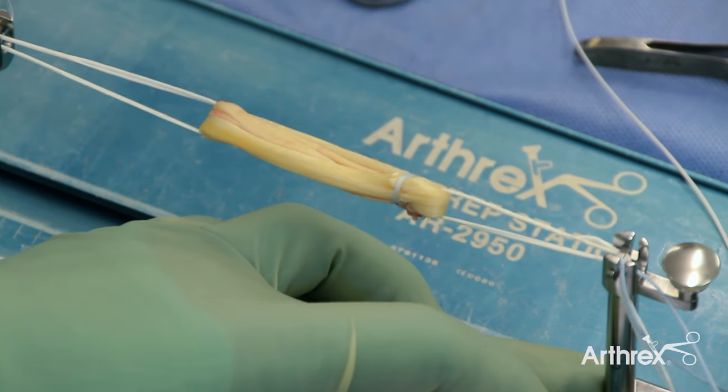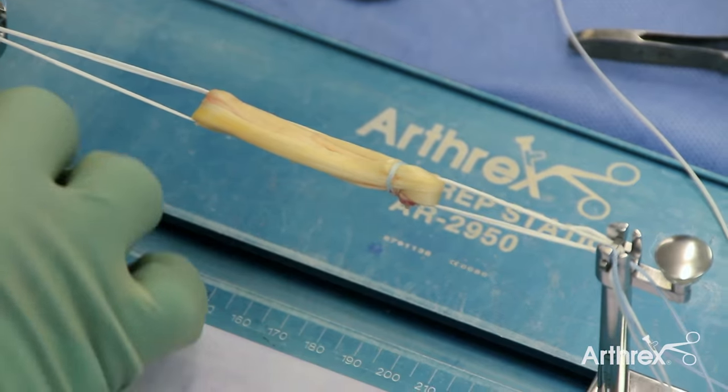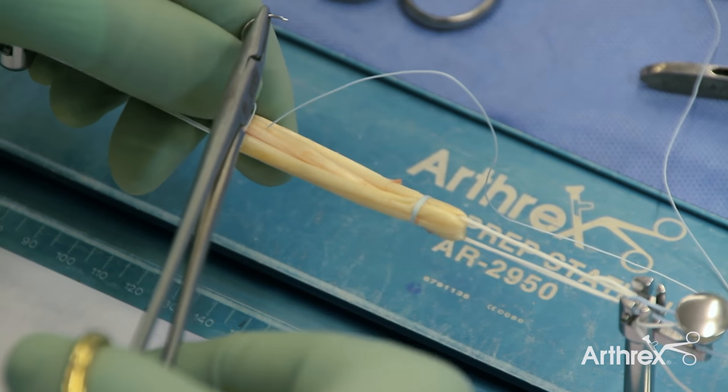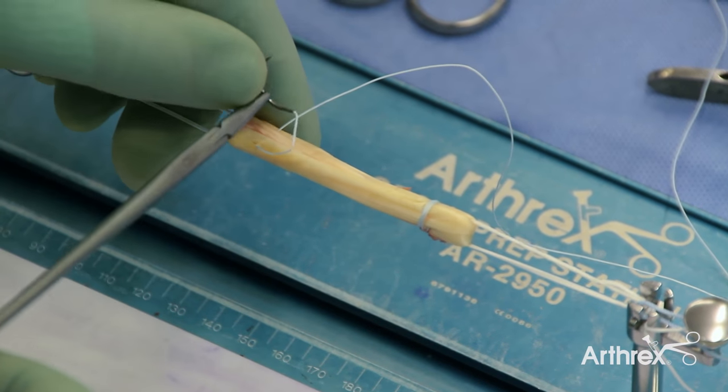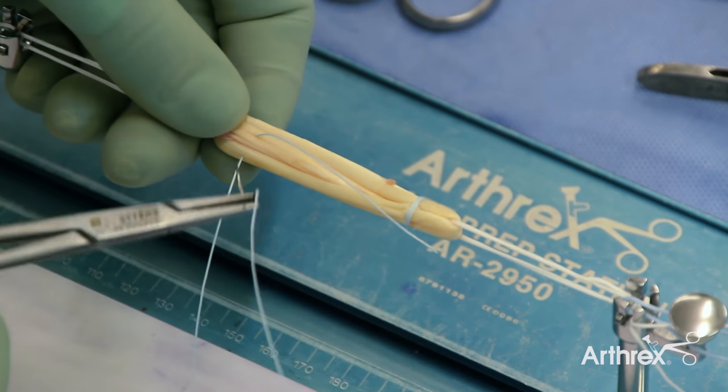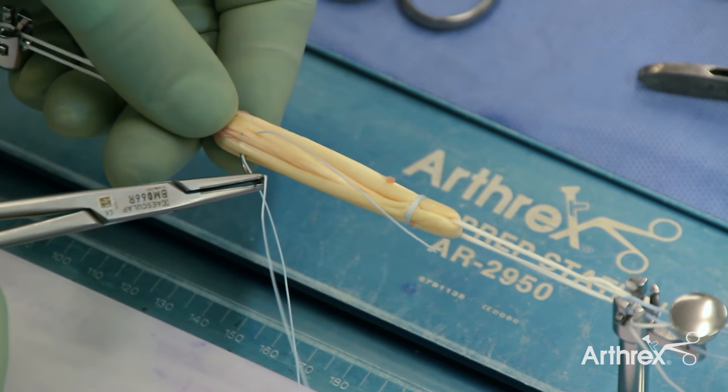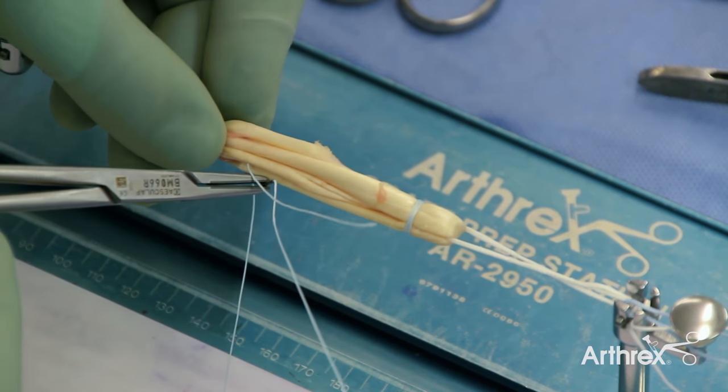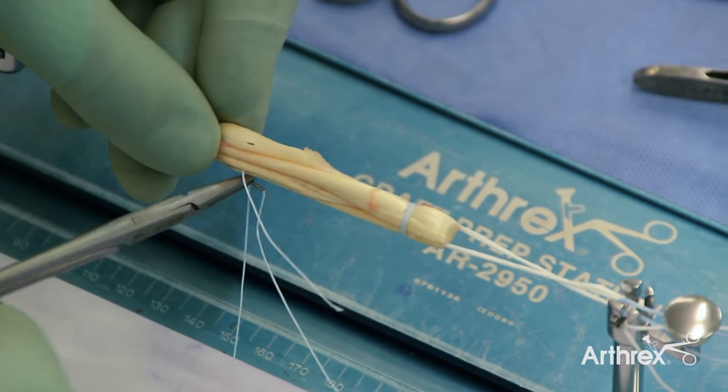Now the graft has been secured and we can start to apply tension. To finish graft preparation, the zero fiber wire is used once more at the other end of the graft, again starting on the inside and coming out, then going back through all four limbs.